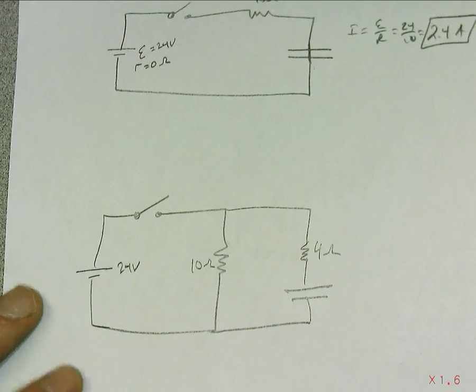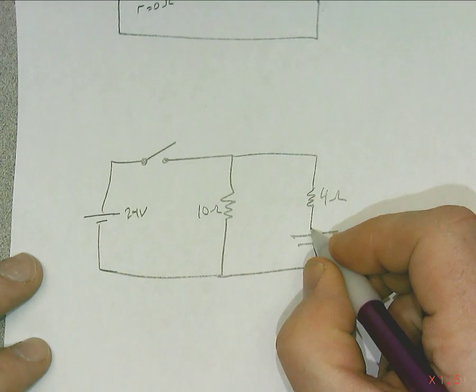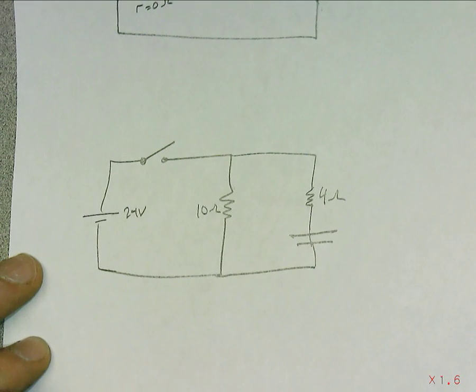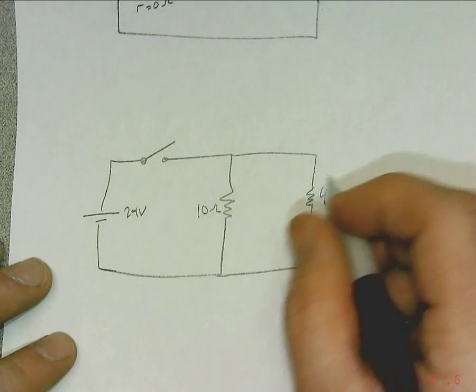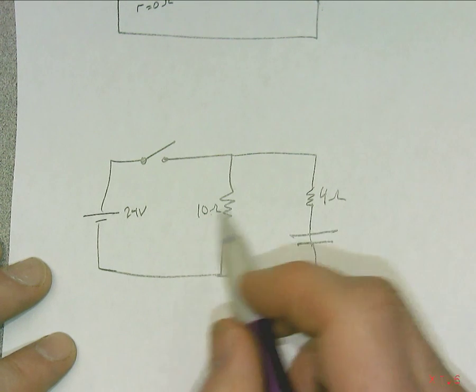So this is 10 ohms and 24 volts in parallel with another resistor. This resistor is 4 ohms, and there's the capacitor. So at time T equals 0, what we have is that, again, this looks like a short, and so it's a 10 ohm in parallel with a 4 ohm. We'd have to figure out what the resistance is.